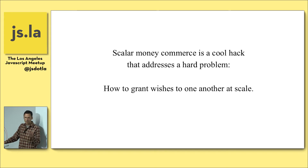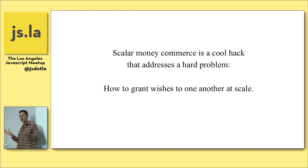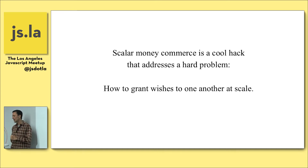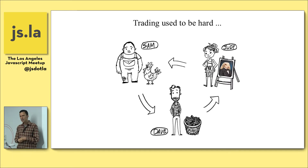Scalar is just a fancy word for one number. Vector is a fancy word for more than one number. Scalar money commerce came around to solve a really hard problem — it's thought to have come around about 6,000 years ago, maybe in China. And that problem is how to grant wishes to one another at scale. This is trading, and trading used to be really hard.